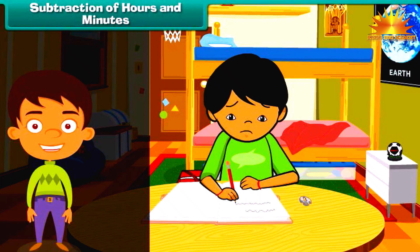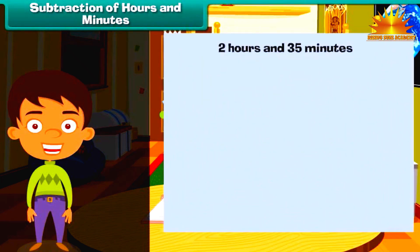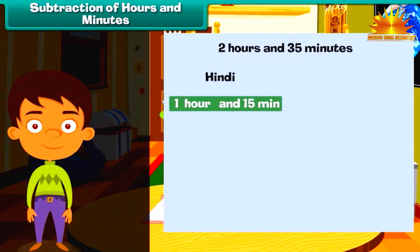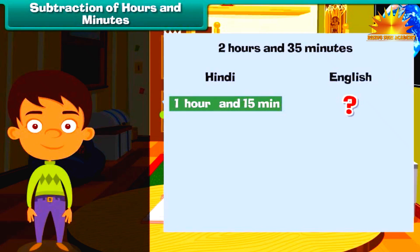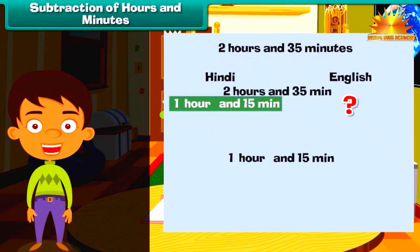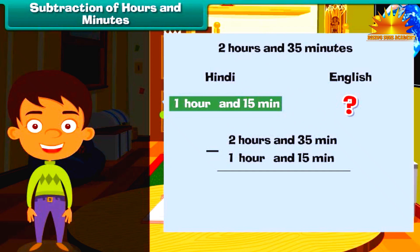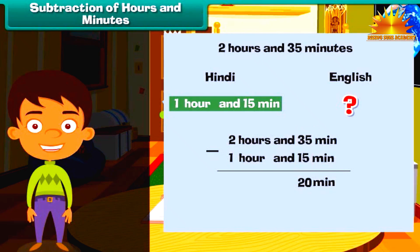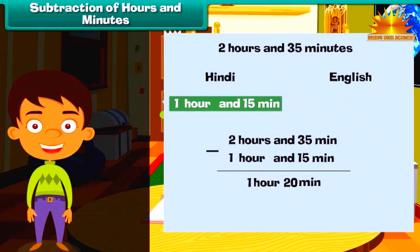Ladika completed her English and Hindi homework in 2 hours and 35 minutes. Hindi homework was over in 1 hour 15 minutes. How much time did Ladika take to complete her English homework? Subtract the time taken for Hindi homework from the total time. First, subtract the minutes: 35 minus 15 is 20 minutes. Now subtract the hours: 2 minus 1 is 1 hour. So Ladika took 1 hour and 20 minutes to complete her English homework.